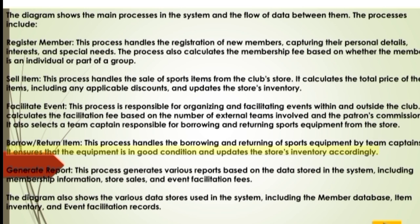The borrow/return item process ensures that the equipment is in good condition and updates the store's inventory accordingly. The generate report process generates various reports based on data stored in the system, including membership information, store sales, and event facilitation fees. The diagram also shows the various data stores used in the system, including the member database, item inventory, and event facilitation records.